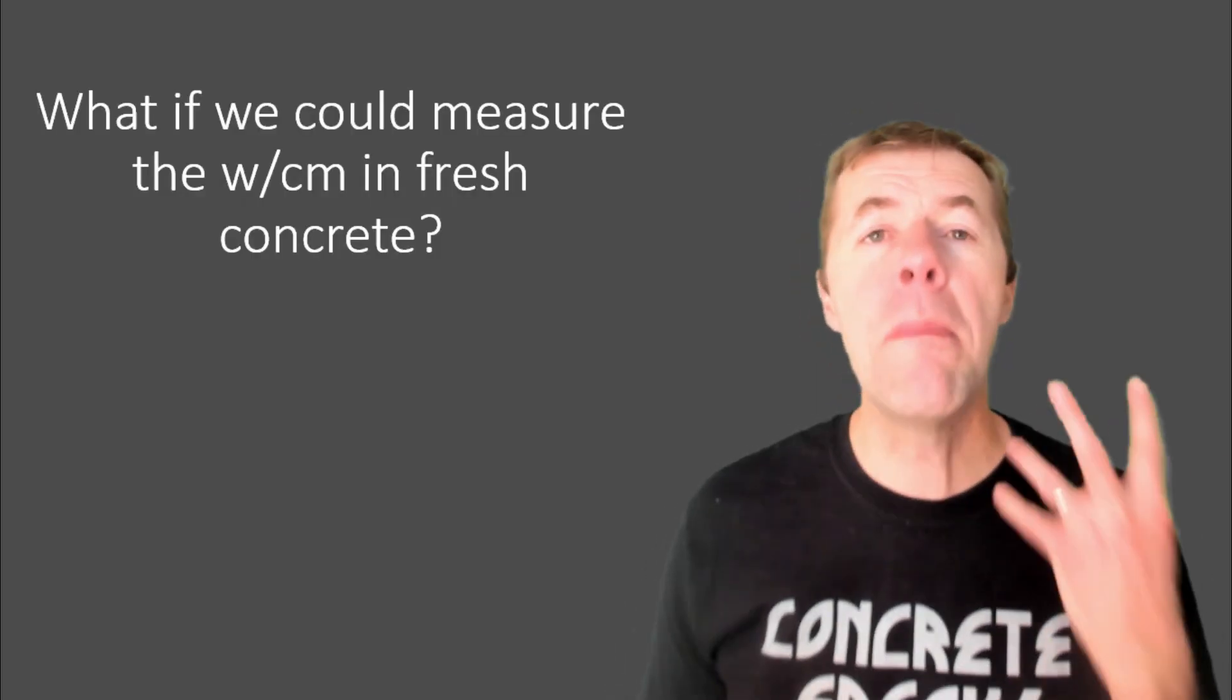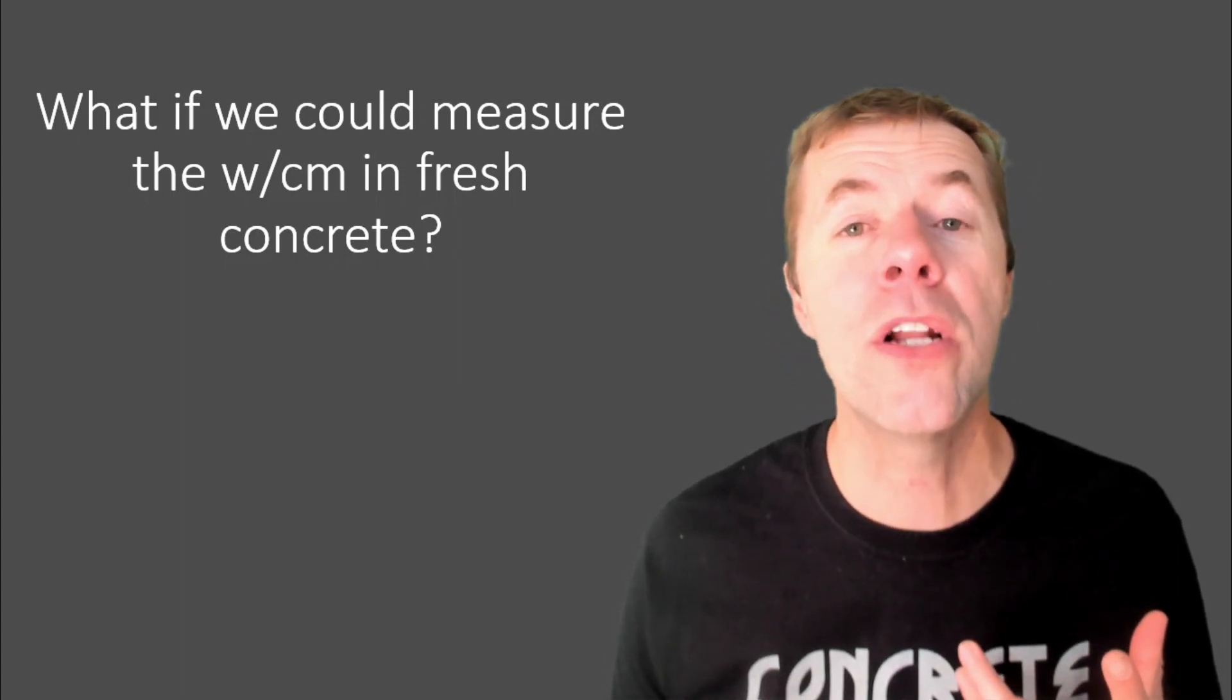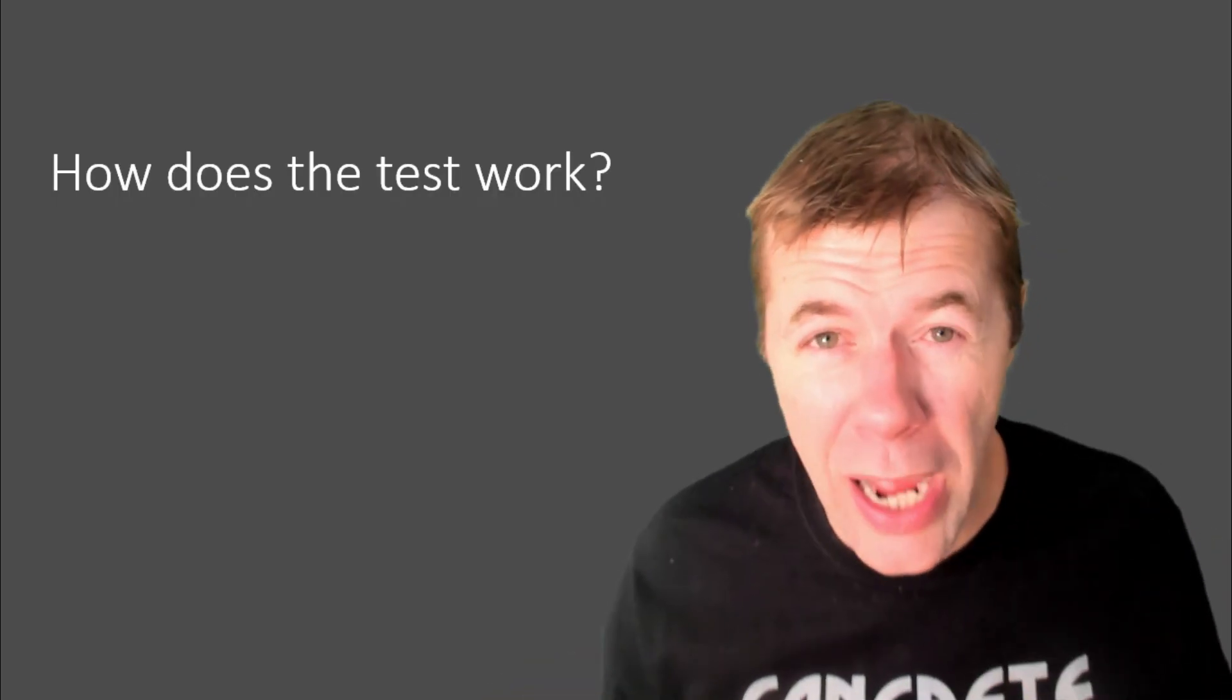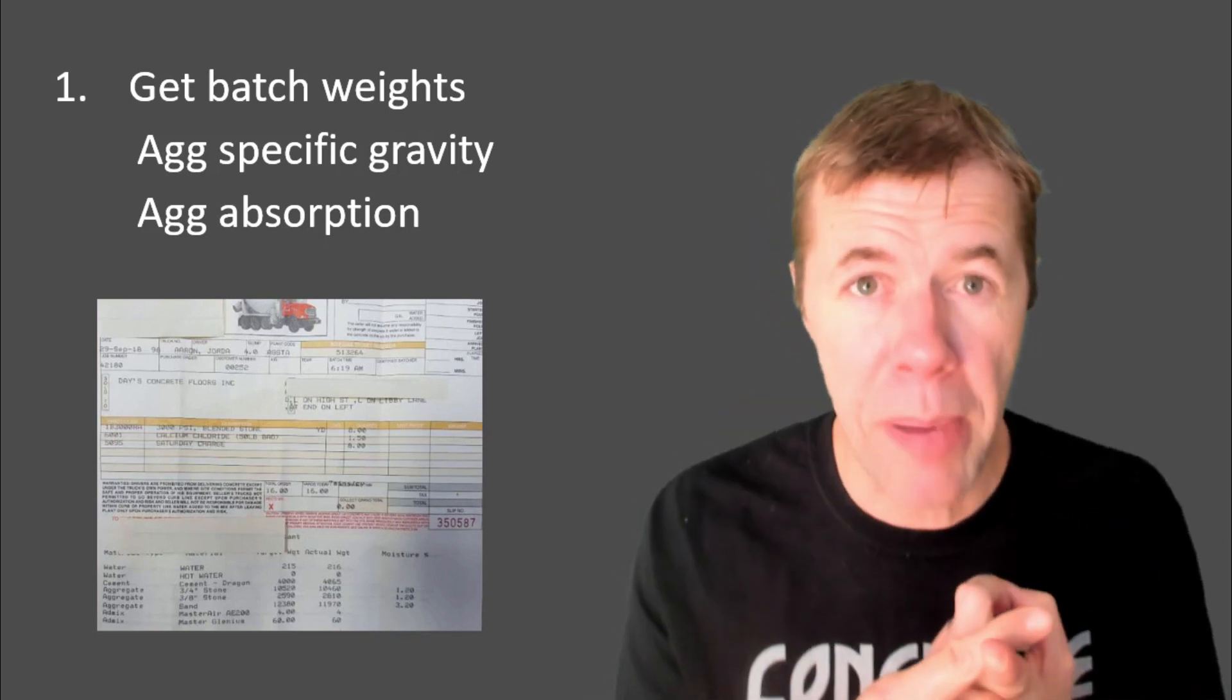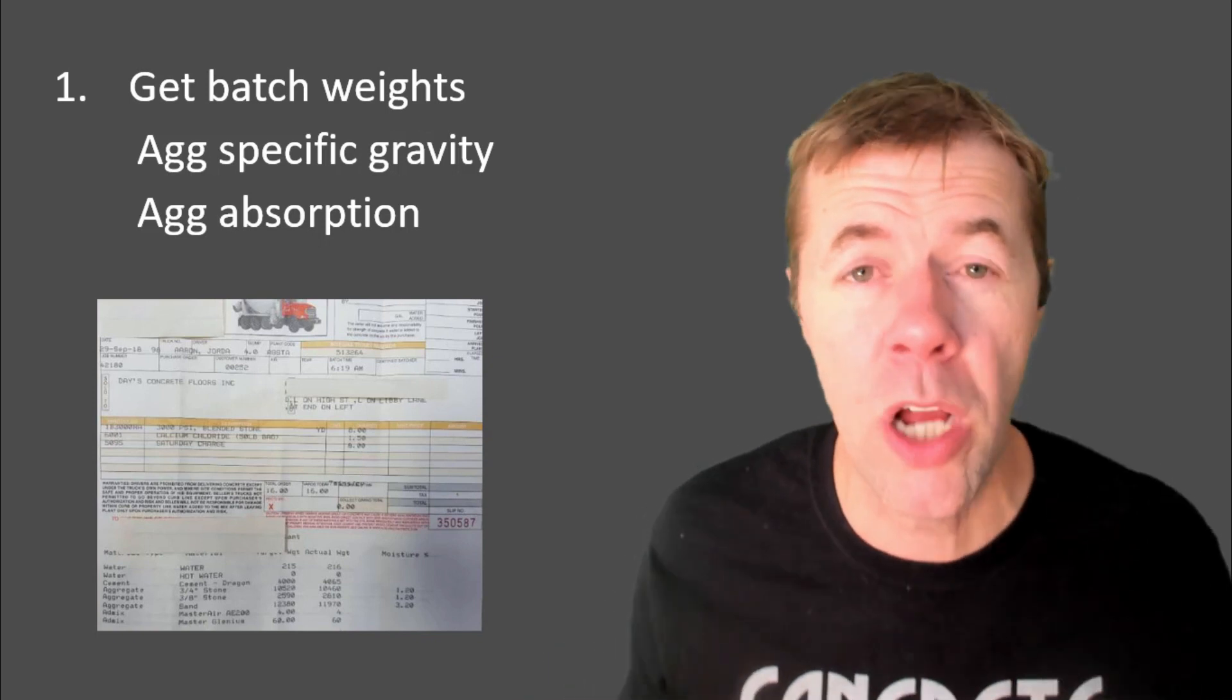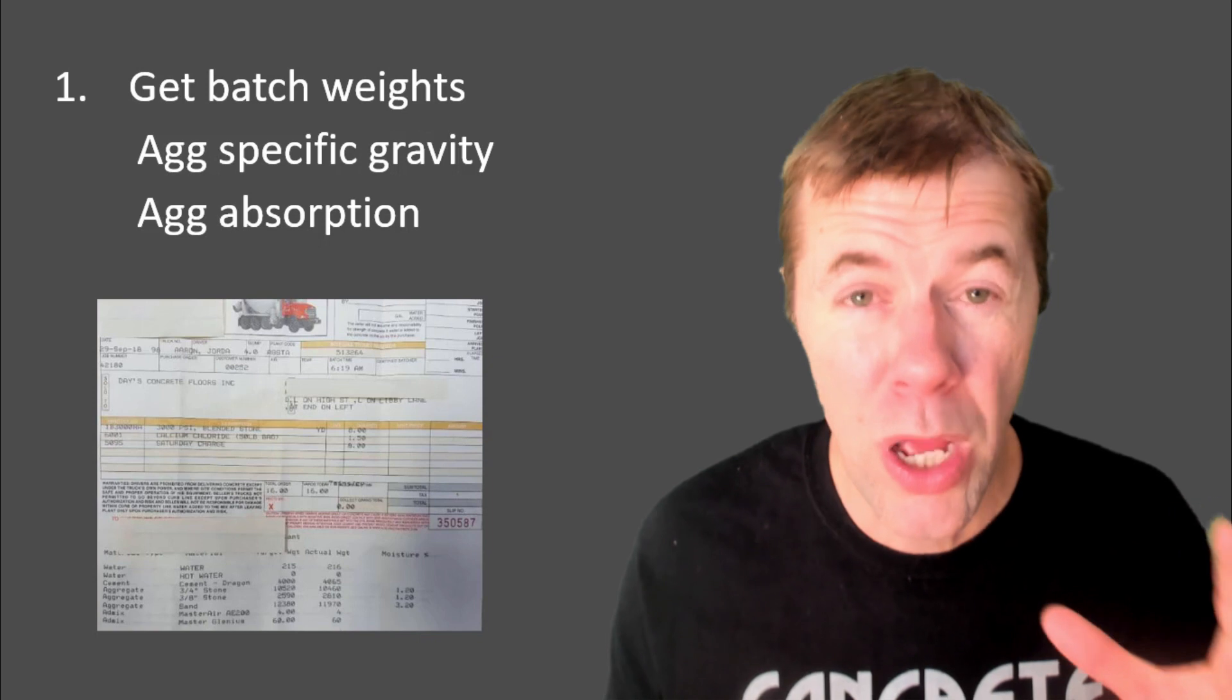What if we could measure the water-to-cement ratio in fresh concrete? And we're going to try to do that today with a test called the Phoenix! How does this test work? How does the Phoenix work? You need a batch ticket. You need to know the batch weights. You need the specific gravity of your aggregate and the absorption of your aggregate. Those are widely known numbers. You can't do concrete mixtures without them.